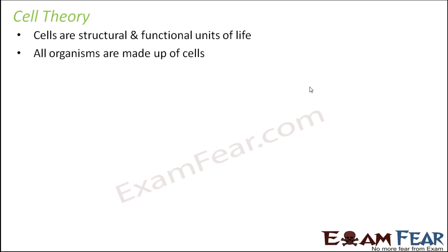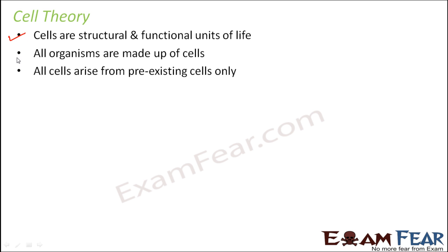All organisms are made up of cells — any type of living organism, starting from bacteria to a human being, to an elephant, to a plant, to aquatic organisms. All cells arise from pre-existing cells only; there is no other way that new cells can be formed. These were the three main important points of the cell theory. But as time passed and more scientists observed new things, a few more points were added to the cell theory by modern scientists.